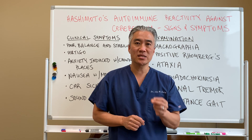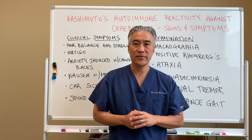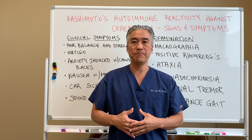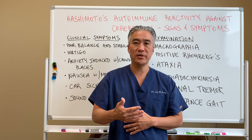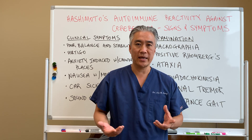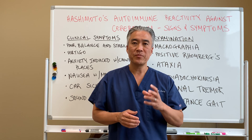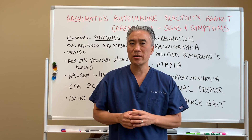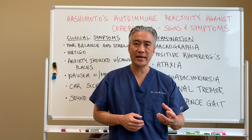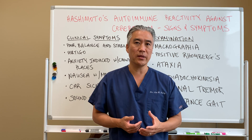We're going to look at signs and symptoms and examination findings for cerebellar dysfunction. When we have a patient who comes in and has Hashimoto's thyroiditis and they have positive antibodies — TPO, TGB antibodies — we need to look at patients and say, is their cerebellum healthy? Do they have signs and symptoms of secondary autoimmunity to the cerebellum?